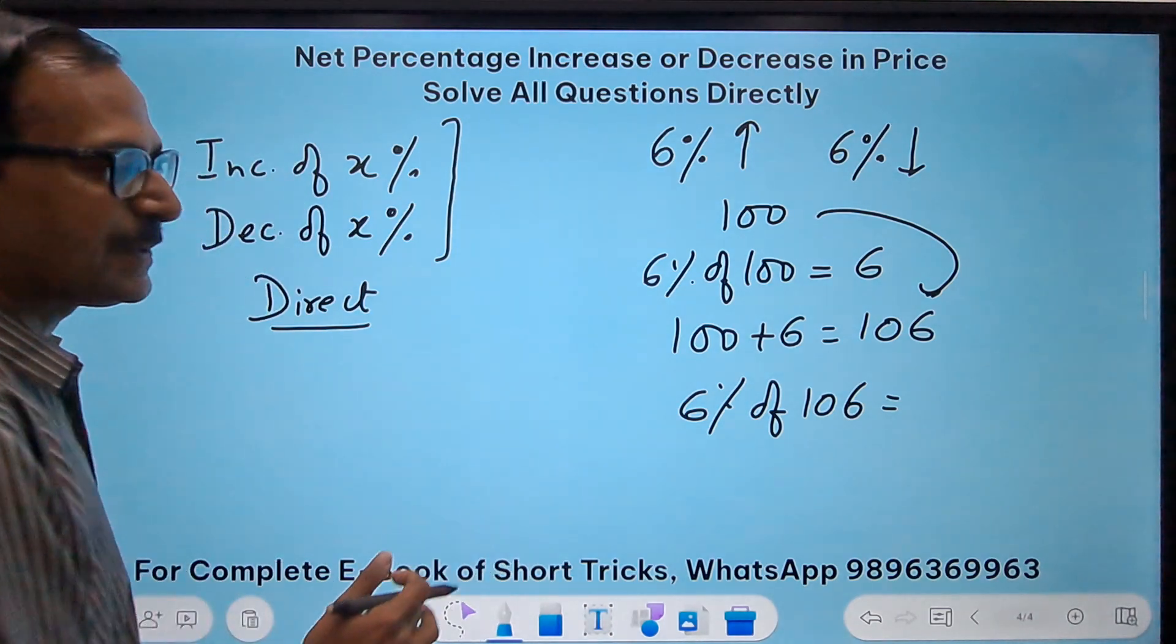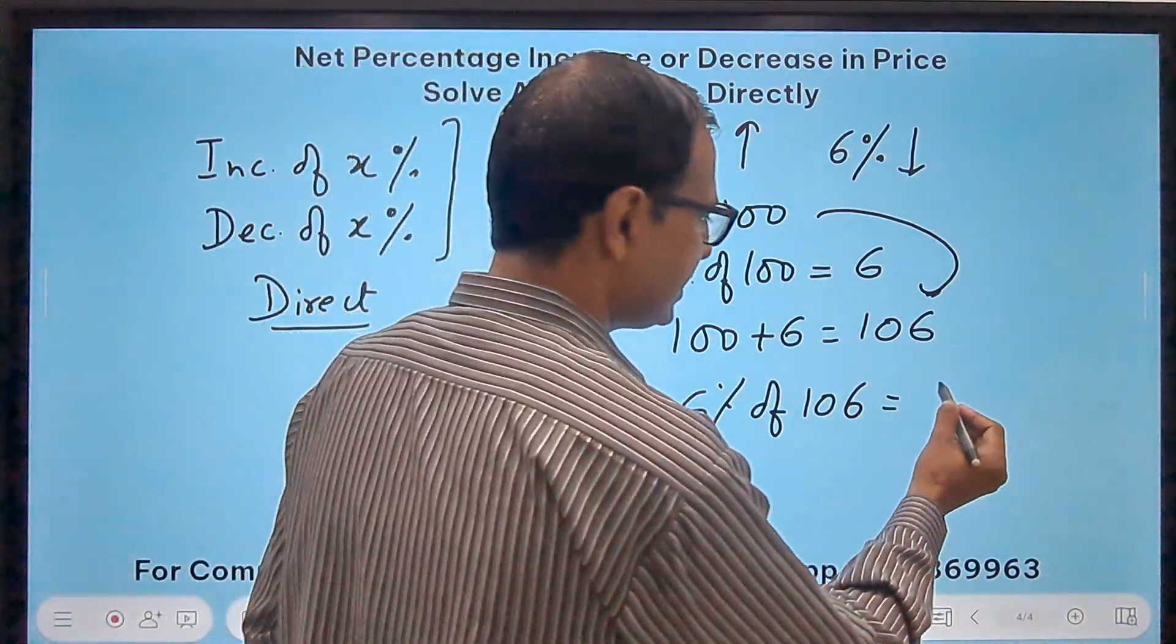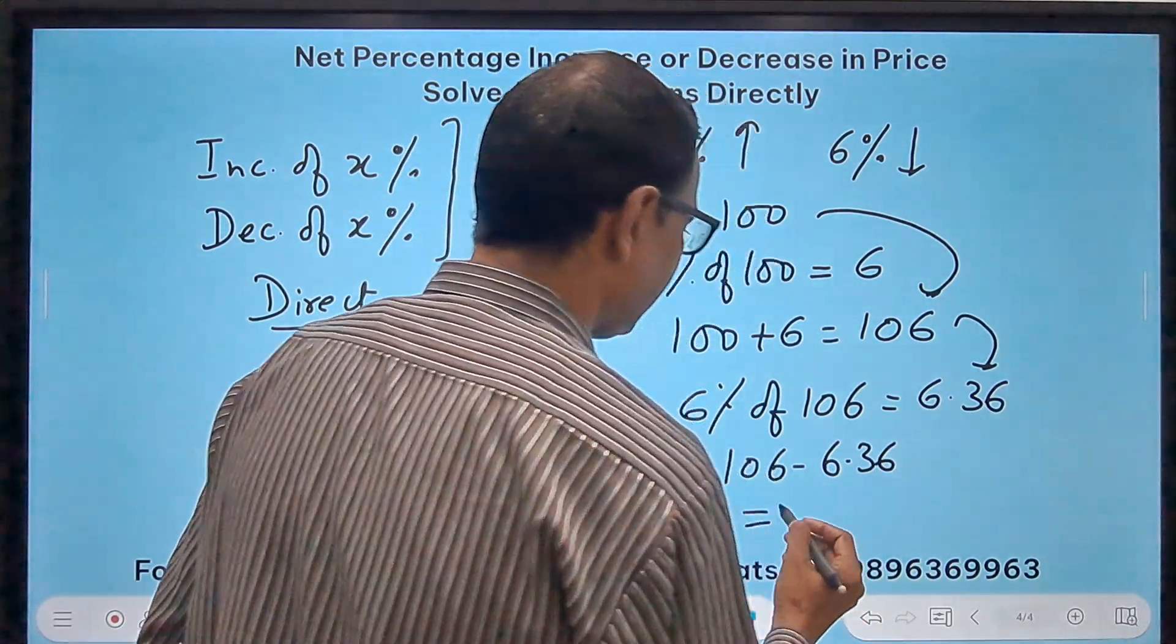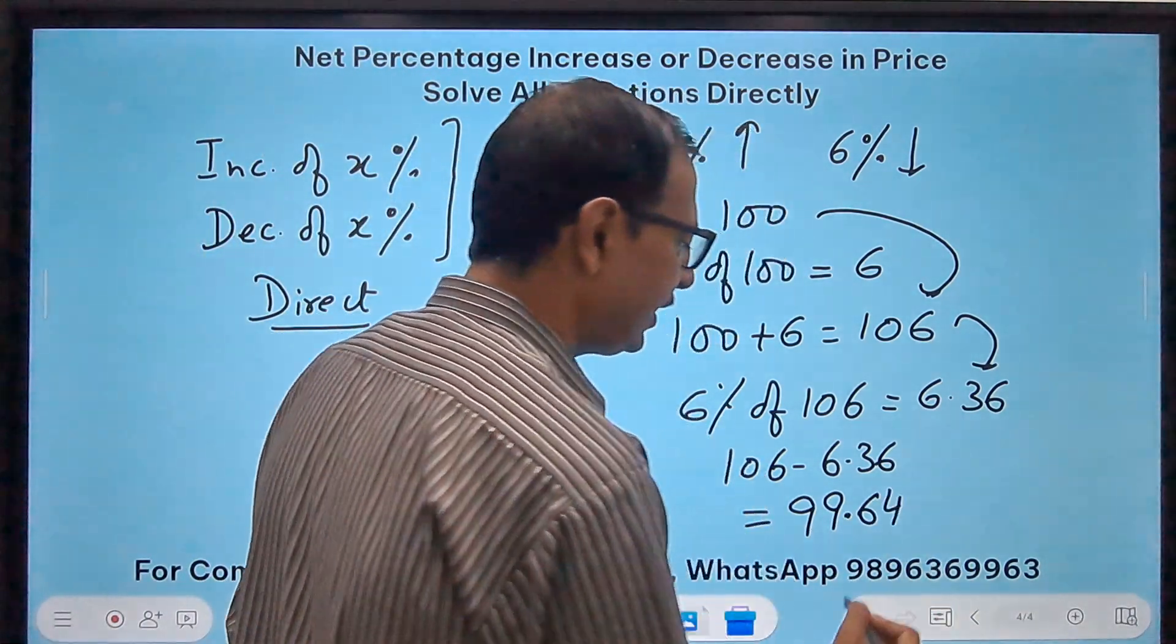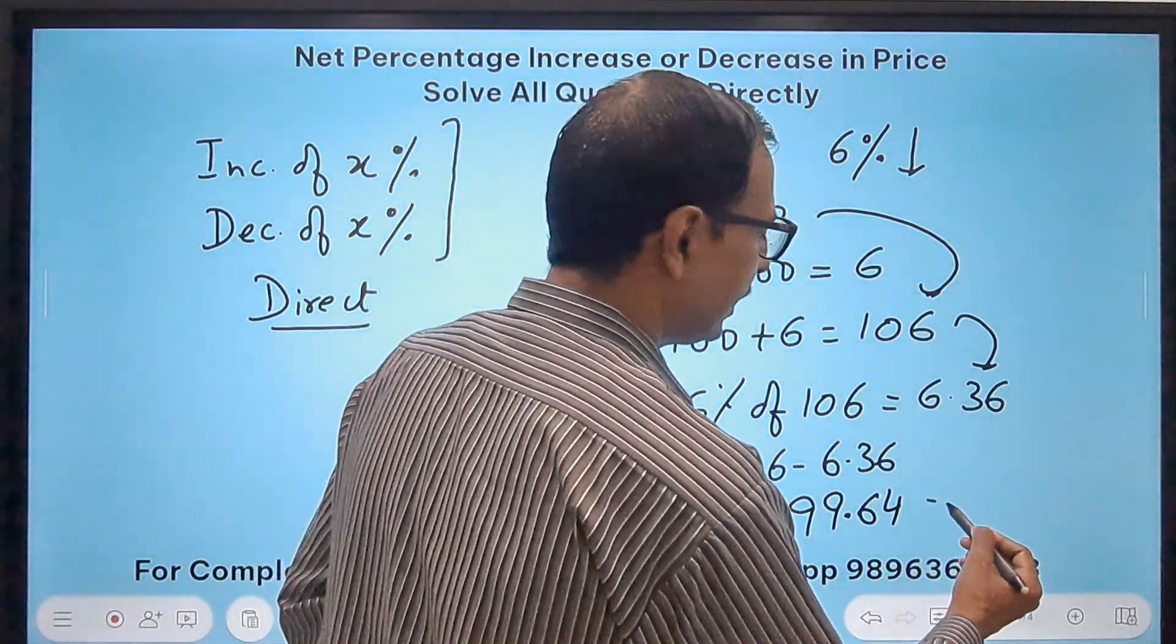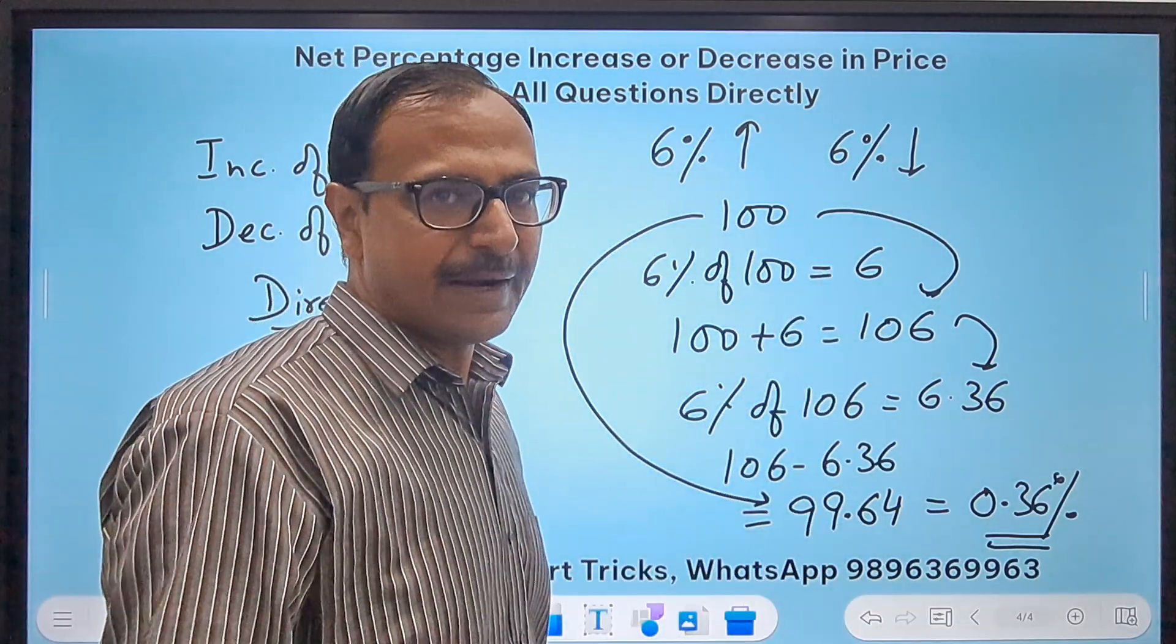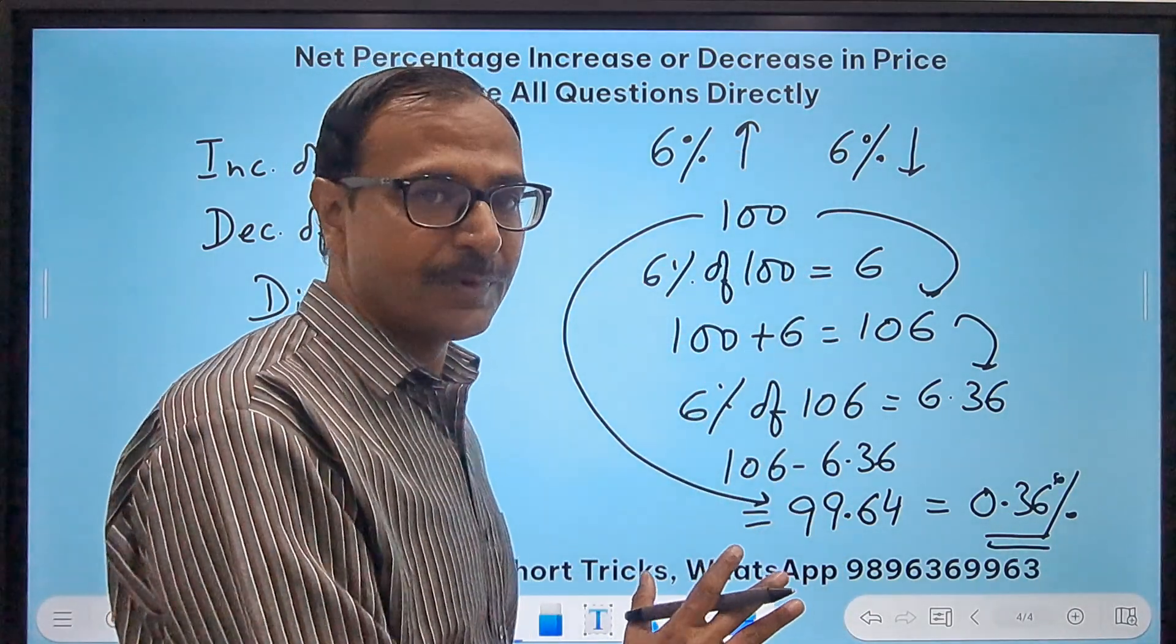And that is decrease. So 106 minus 6.36 will get me the final answer, that is 99.64. So the variation, the difference between 100 and 99.64, is 0.36 percent. 0.36 will be your answer. Takes quite a while. Even if you are very good in calculations, you will take at least one and a half minutes to solve this.